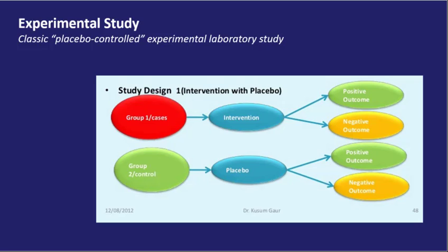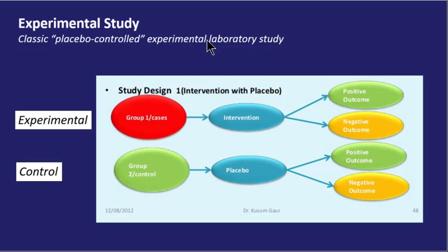To provide context before presenting epidemiological topics further, we first turn to the classic experimental study most people are familiar with. These are often used in clinical settings to test the efficacy and safety of a drug or intervention. Study participants are divided into two groups: an experimental group that receives the drug or intervention, and a control group that does not. In human subjects, often a placebo is given to the control group which looks, feels, and tastes like the drug but is in fact inactive. This guards against one group being aware of taking a medication while the other is not, which can bias results through the placebo effect.